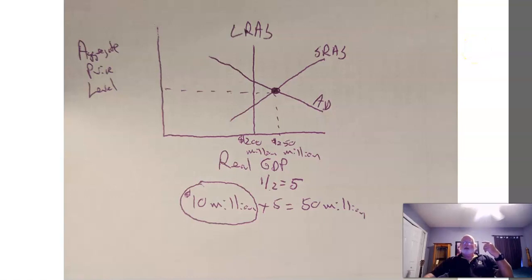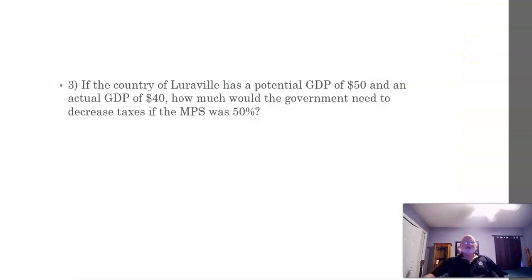I'm doing a spending multiplier for question two and then a tax multiplier for question three. Let's go on to question three. These are just examples. If the country of Luraville has a potential GDP of $50, so that's under LRAS, and actual GDP of $40—before we go any further, if potential GDP or what I like to call optimal GDP is $50 and the economy has $40, we're in a recession. So it's going to be to the left of that. There's not enough air in the tire. You don't want to go on a diet, you need to put on a few pounds because you're looking anorexic. The deal is, a lot of people are very thin and you want to put on weight. You want to expand the economy.